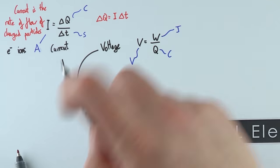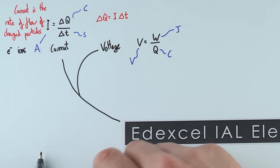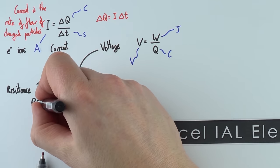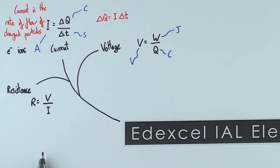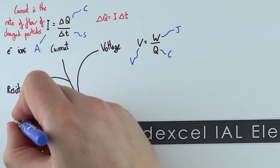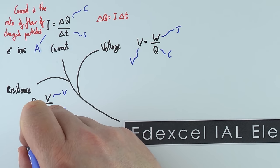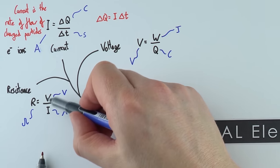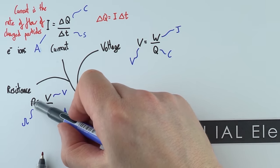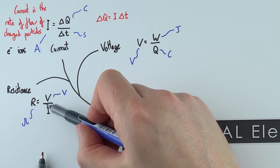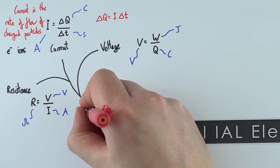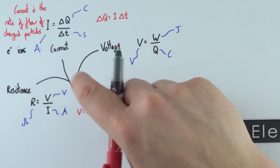If we know the current and the voltage we can also look at resistance. The resistance of an object is defined as the voltage across it divided by the current through it. The voltage is measured in volts, the current in amps, and the resistance is in ohms — that Greek omega symbol. Something with a high resistance is going to let less current flow. A really important form of this equation is V equals IR, so that's how these three things are all linked together.